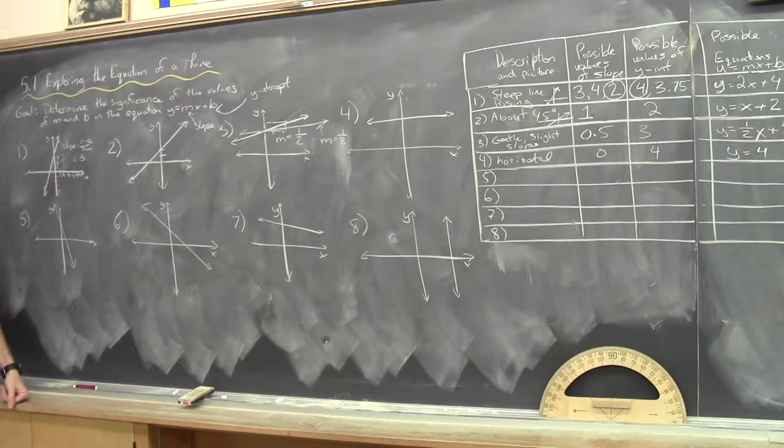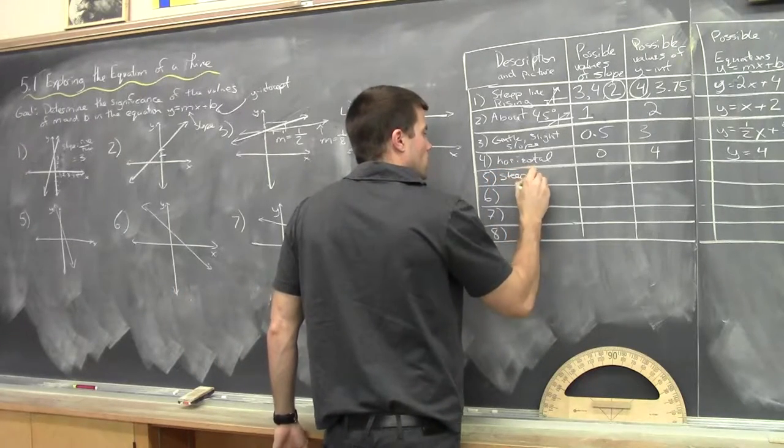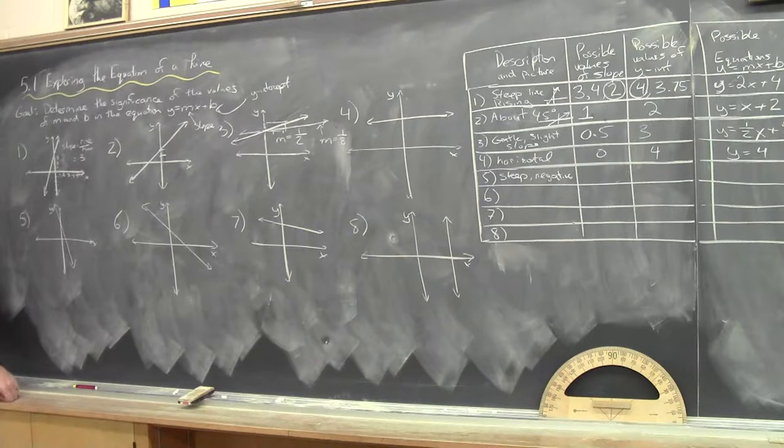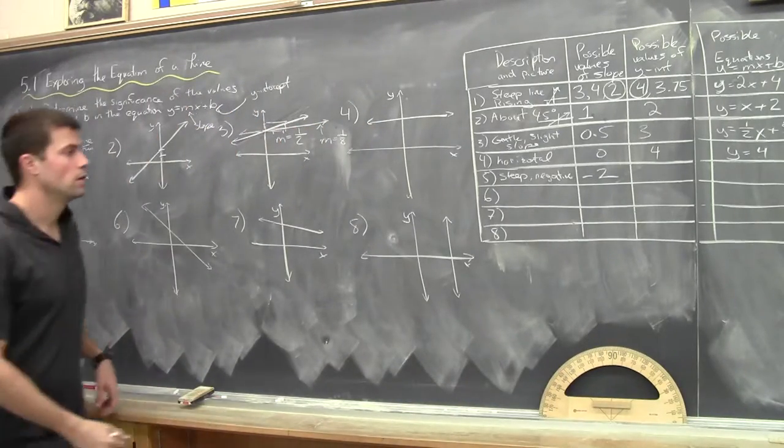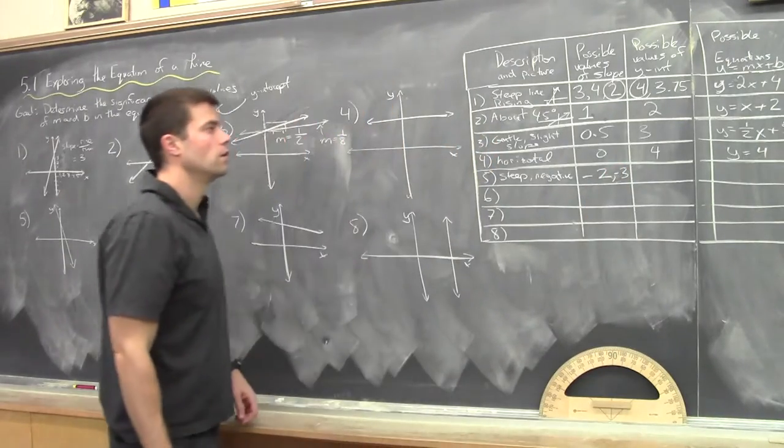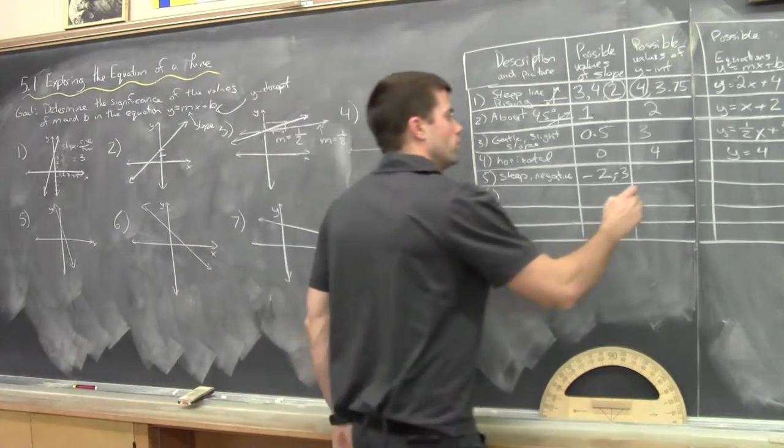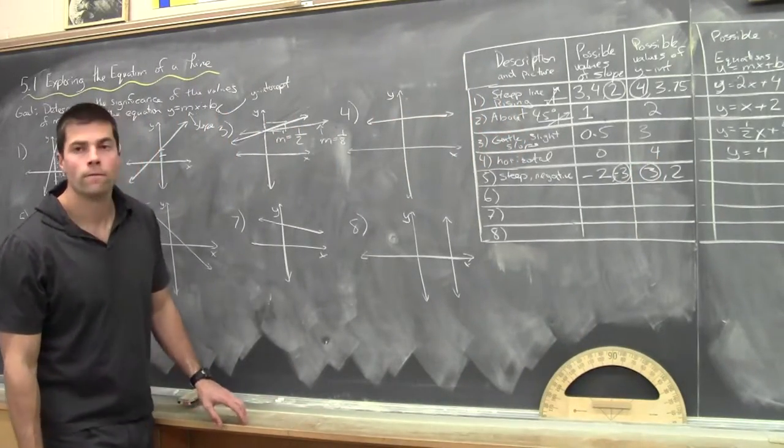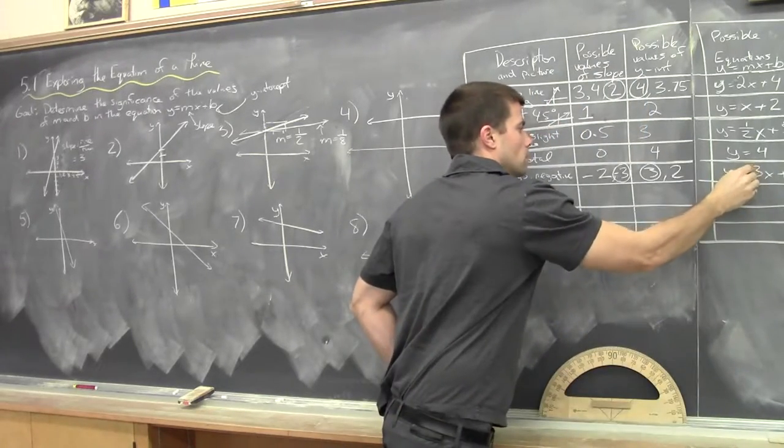Alright. So, the fourth one. Horizontal. Good. Horizontal. Possible values of slope. Zero. The only value of slope. It would be possible in this case. It's the only value. Y in the numerator of four. Yep. Good. And the equation. Y equals four. Excellent. No slope. So, in our equation, y equals mx plus b. The m is zero. So, that x value, it doesn't matter. It's gone. So, y is just your y-intercept value. That's your whole equation. Alright. Any questions there?